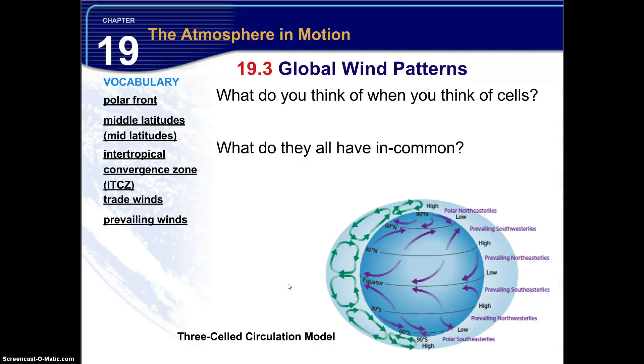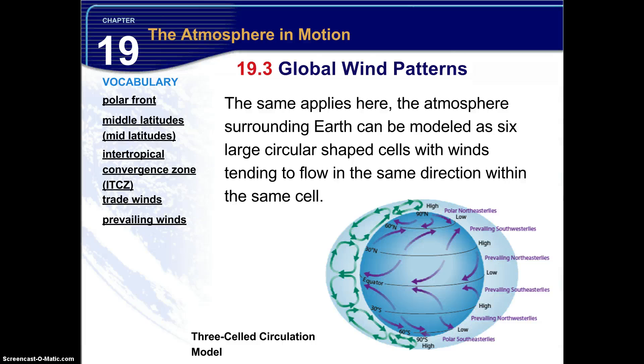What do you think of when you think of cells? What do you think of when you think of cells in the body, battery cell, jail cell, some common answers to that question? And what do they all have in common? They're all compartments. The same applies here in the three celled circulation model. The atmosphere surrounding Earth can be modeled as six large circular shaped cells with winds tending to flow in the same direction within that same cell. So you have the green area, where it's rising and sinking in the atmosphere, or the green arrows, where it's showing that cell, as well as the Coriolis effect dictates and bends and deflects air in certain directions, depending on where it is on the planet.